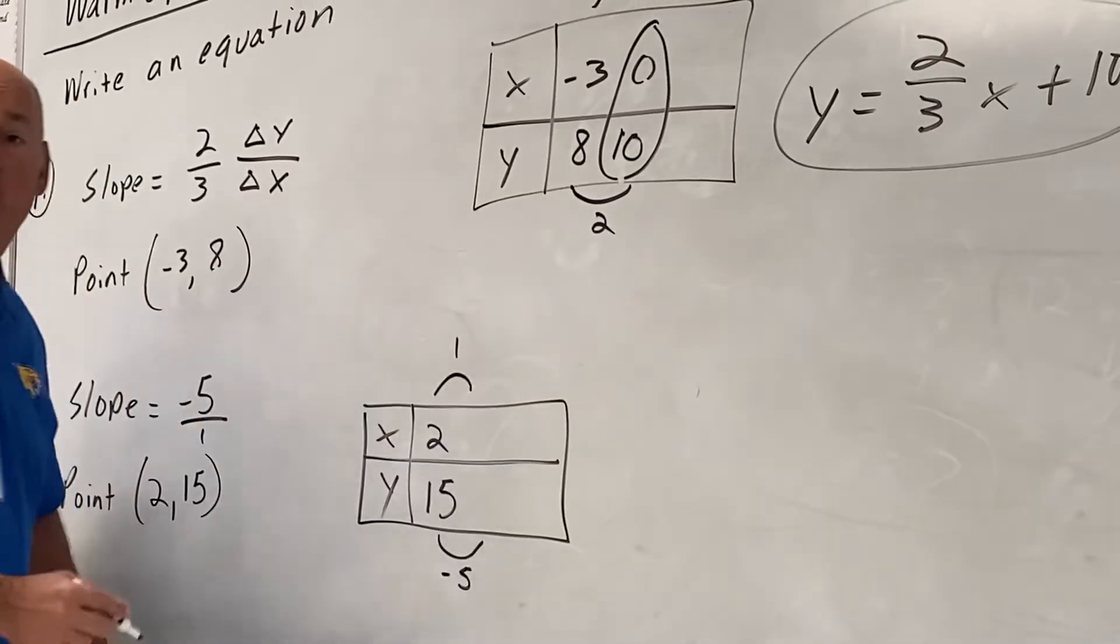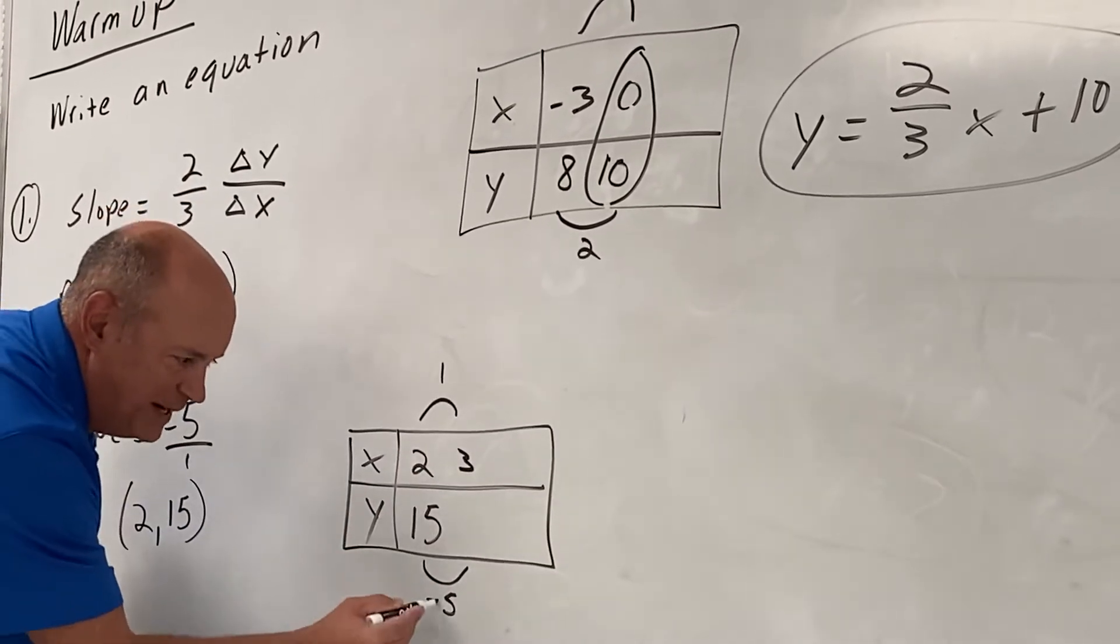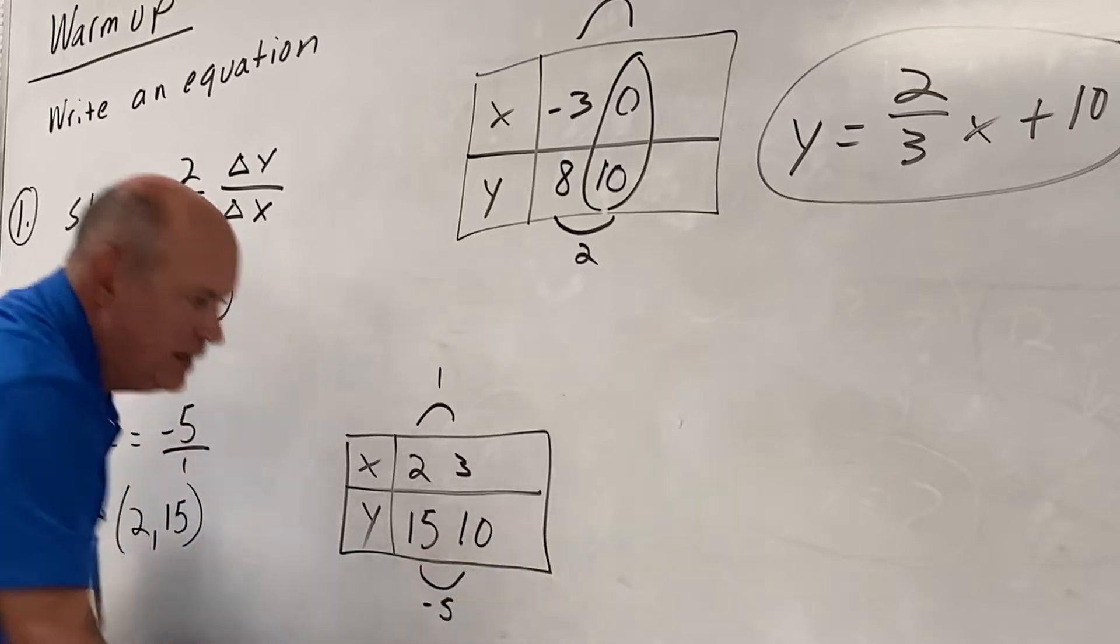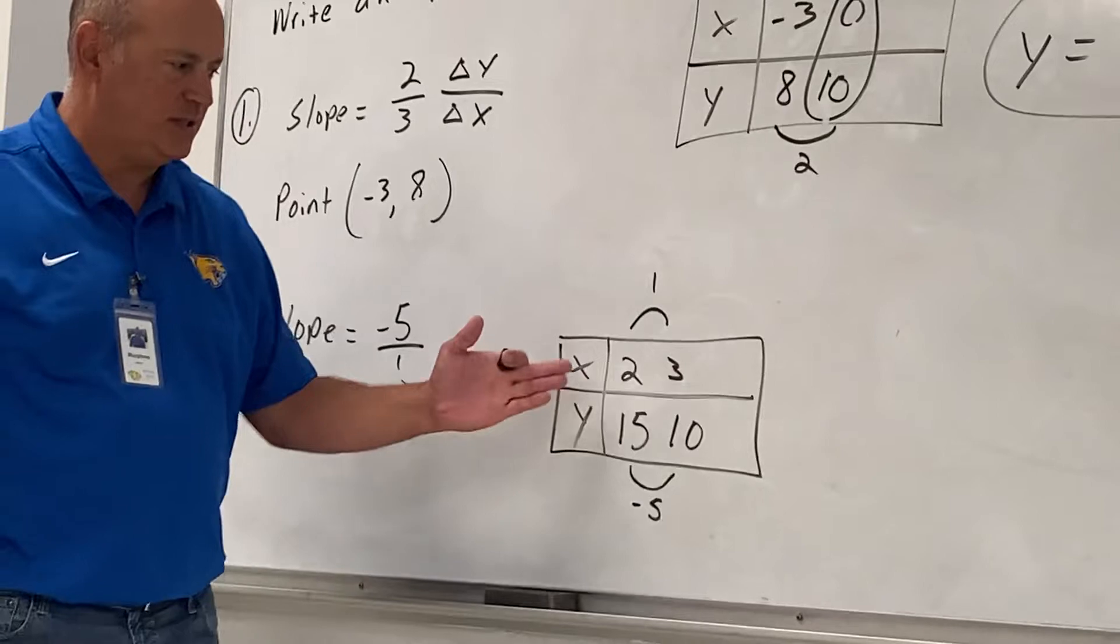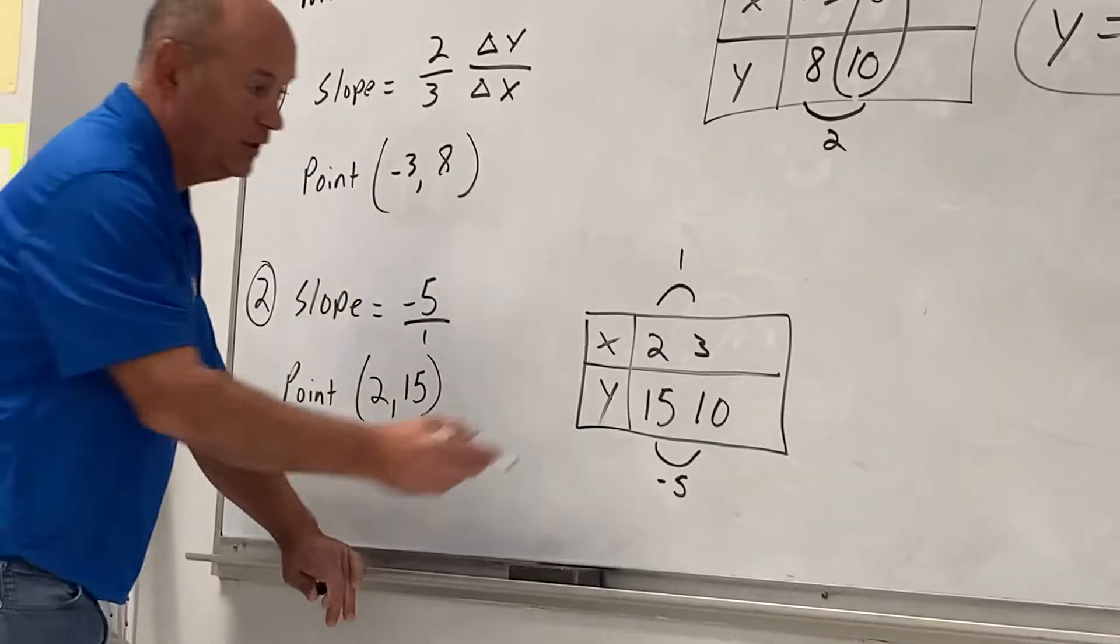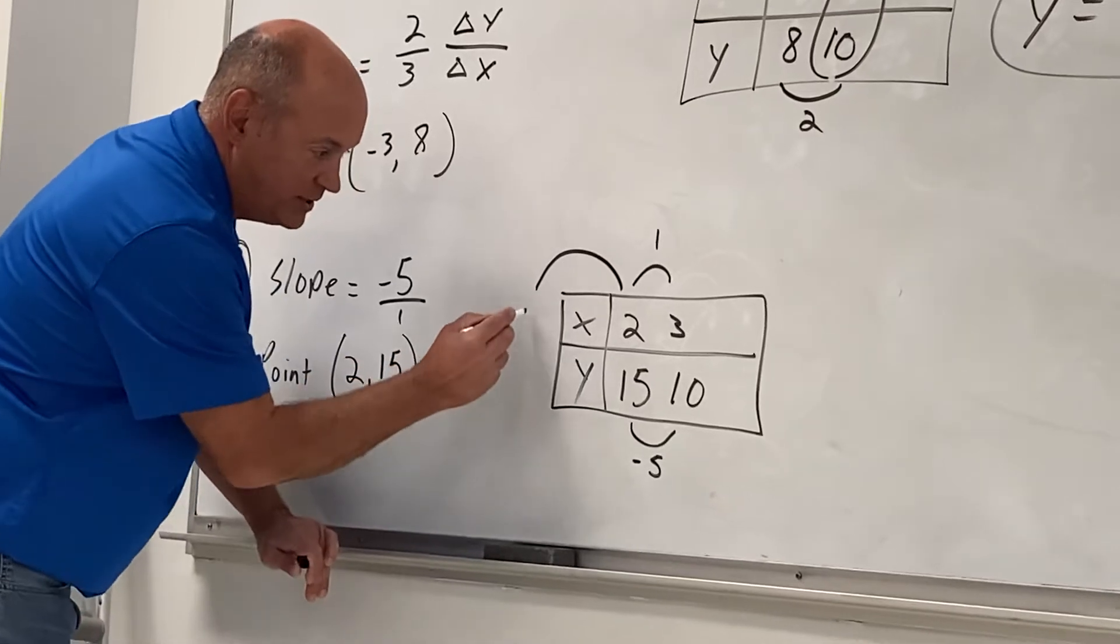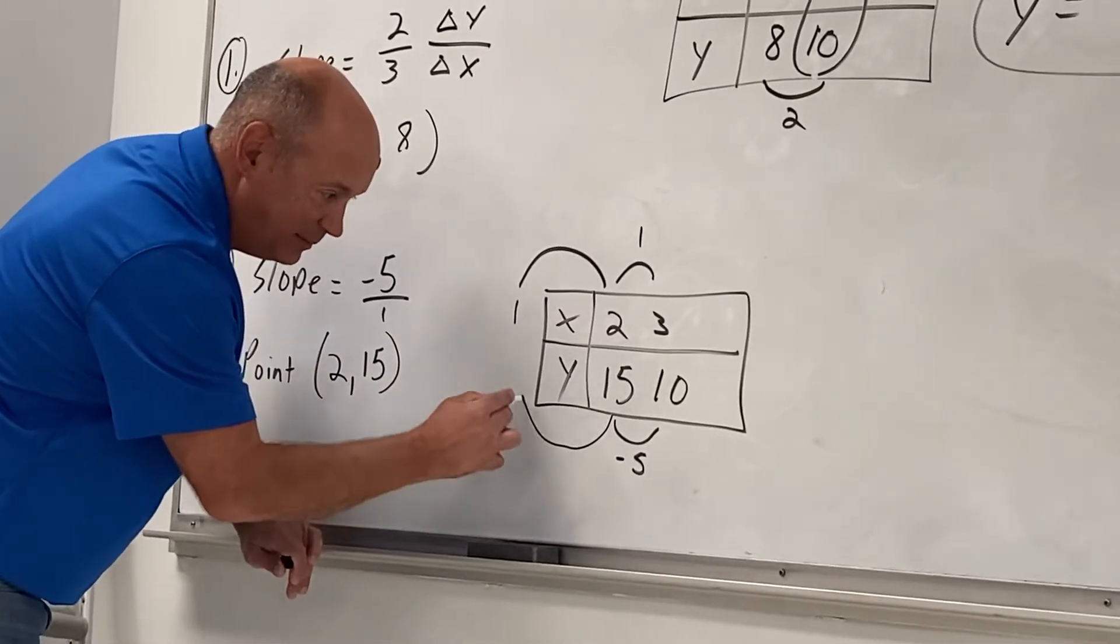What's 2 plus 1? 3. What's 15 minus 5? 10. Okay, if I keep going that way, am I ever going to get to 0? No, because the next number would be 4, 5, 6. I'm going to go backwards. Let's subtract 1. What's the next number? 1. Let's add 5. What's the next number? 20.